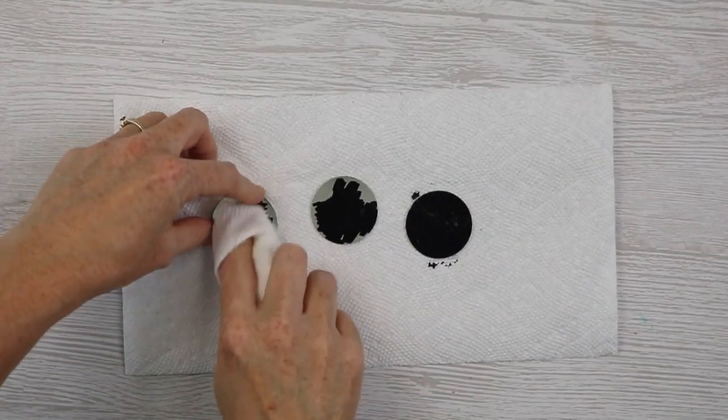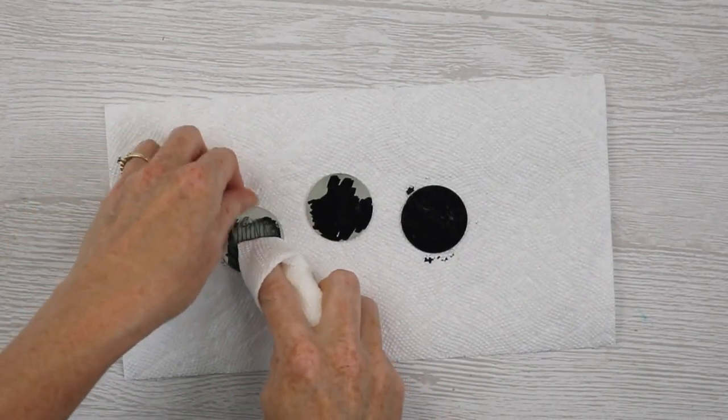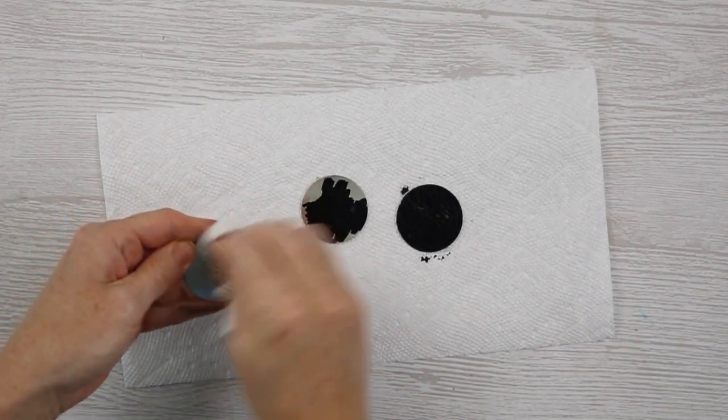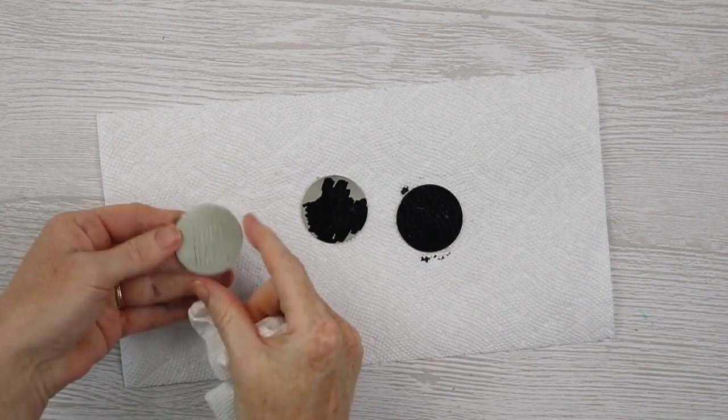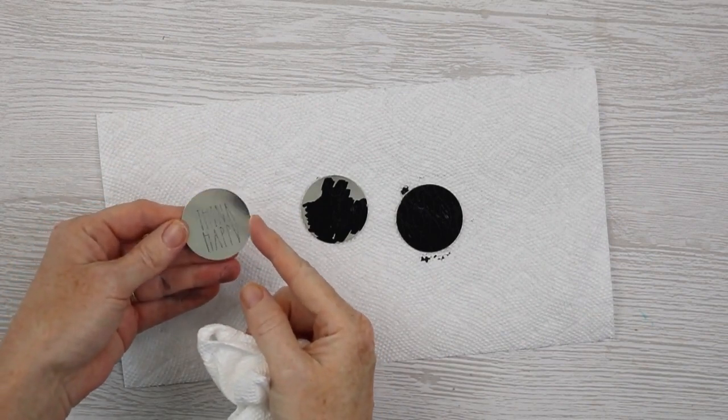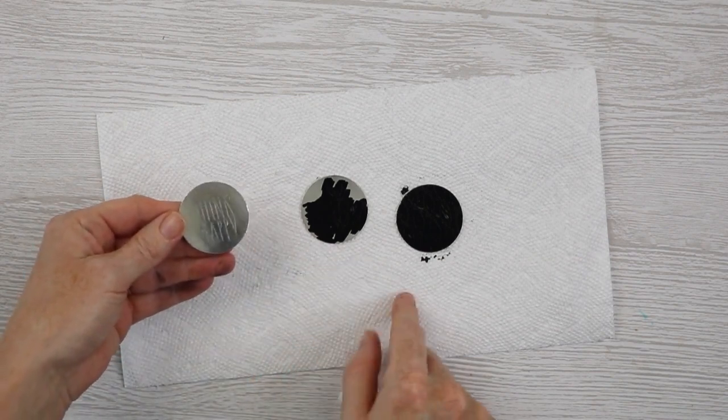Then once this has dried just a few minutes, I'm just going to wipe off all the excess. And you can probably already see that that engraving stands out a lot more with the ink down inside. So I'll just repeat for all of our other dishes.